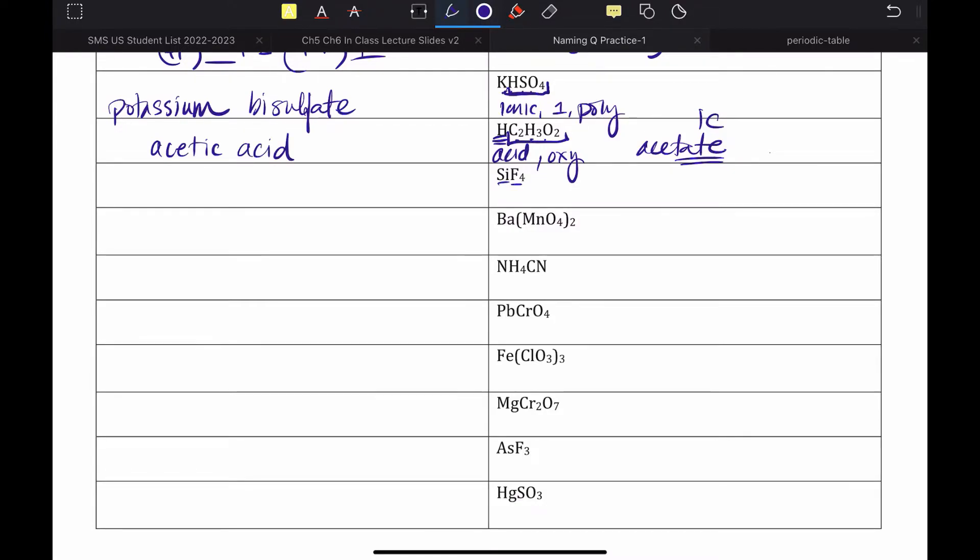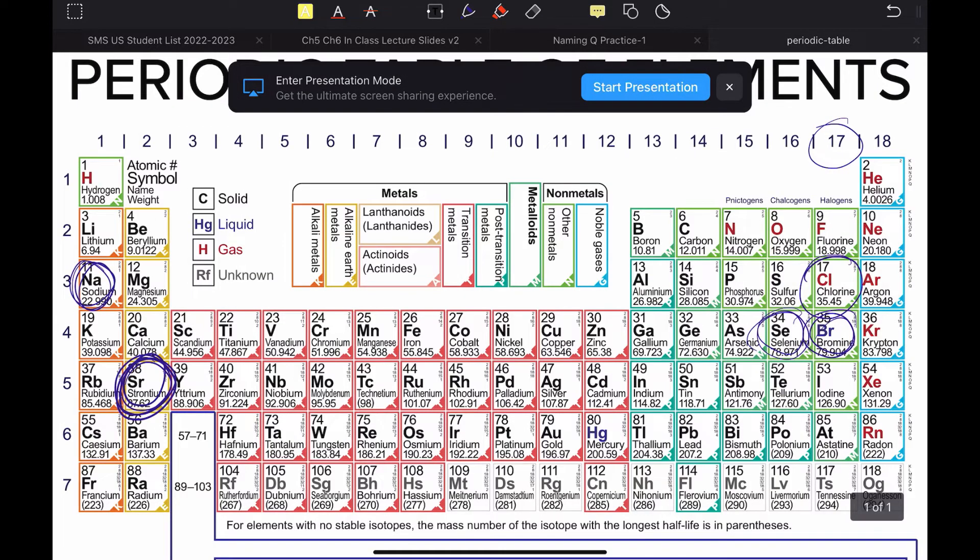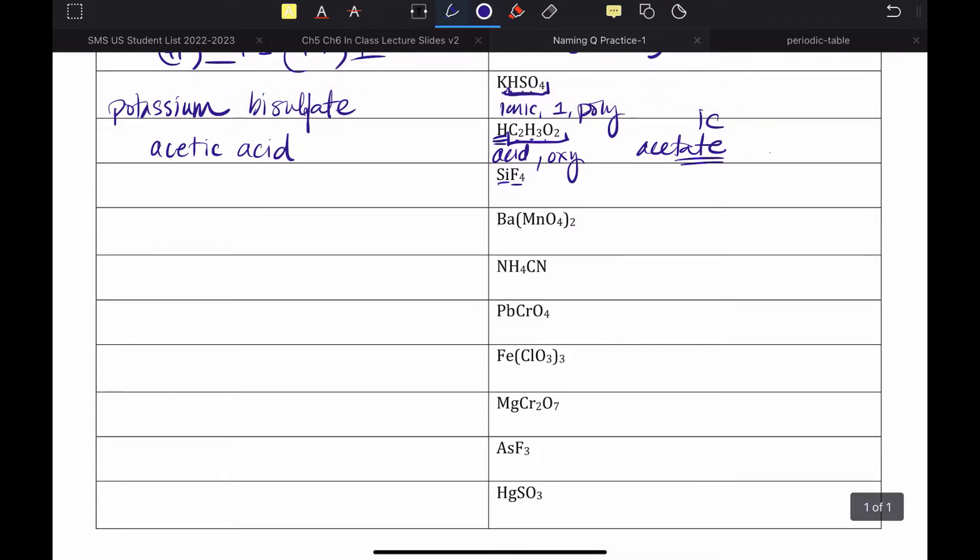Next up, SiF4. I would need to consult a periodic table. And my periodic tells me that silicon and fluorine are both nonmetals. So, I would go back, and I would just write down what my prefixes say. I have silicon. Four is tetrafluoride. And the -ide ending, because it's binary.